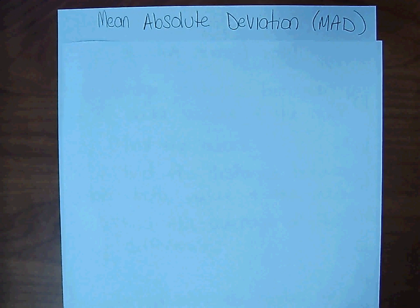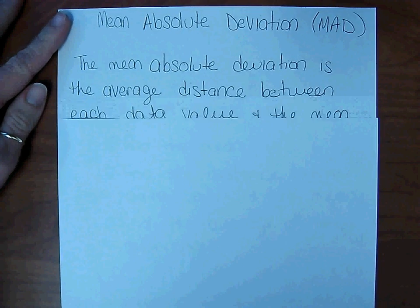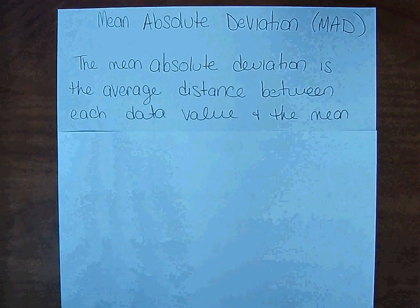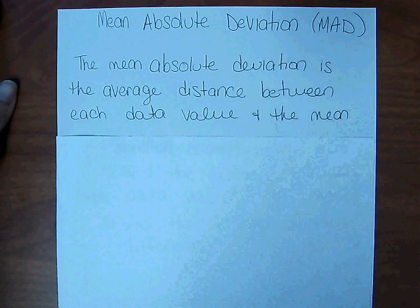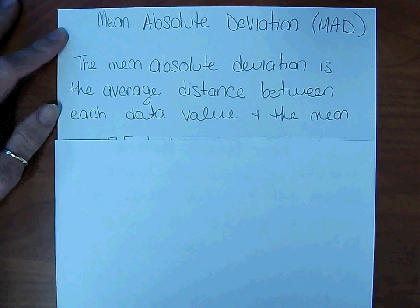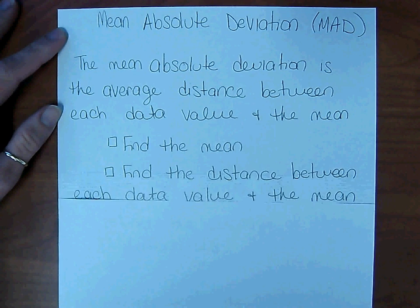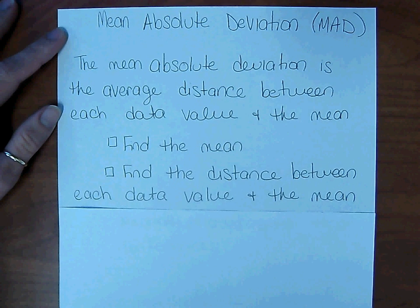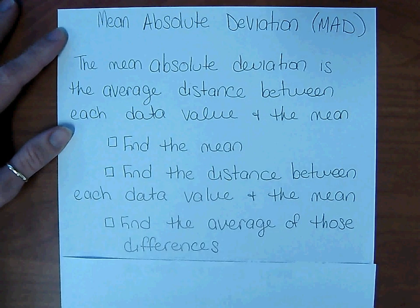Mean Absolute Deviation, or MAD. The mean absolute deviation is the average distance between each data value and the mean. To find the MAD, follow these simple steps. First, find the mean. Then, find the distance between each data value and the mean. And finally, find the average of those distances.